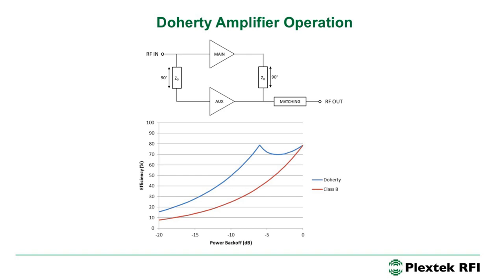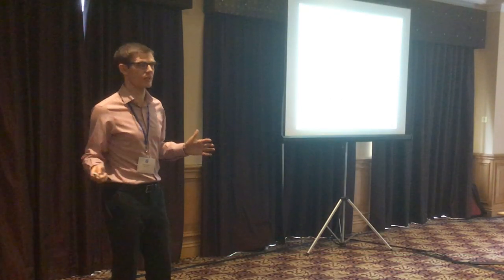The Doherty in comparison has a secondary efficiency peak — in this case at 6 dB — where the efficiency is also 78.5%. The way this works is we have a main amplifier which is conducting all the time doing most of the work at small signal, and at large signal the auxiliary amplifier is kicking in, amplifying the peaks which come along relatively infrequently.